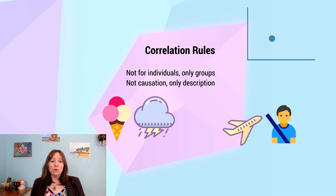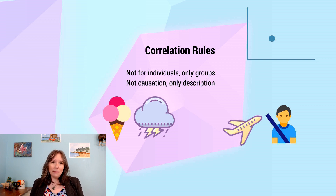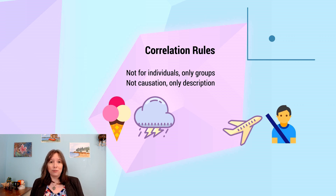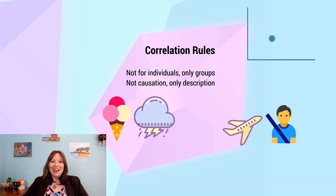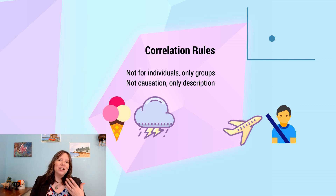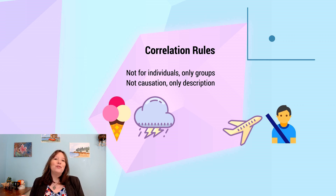Another major pitfall is that correlation does not imply causation. This is descriptive, not inferential — we're only describing an association, not saying there's a cause and effect. For instance, people eat more ice cream in the summer and also witness more thunderstorms. Does eating ice cream cause thunderstorms? What we're actually finding is an extraneous variable — heat and change in temperature — is causing both the desire for ice cream and the thunderstorms. There's no causal link between those two variables.